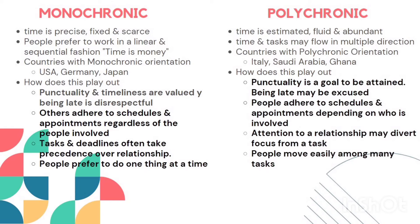In polychronic cultures, punctuality is treated as a goal rather than a strict rule — being late may be excused. People adhere to schedules depending on who is involved; if a superior is unavailable, they'll reschedule accordingly. Attention to relationships may divert focus from tasks, and people move easily among many tasks simultaneously, which might affect their work.